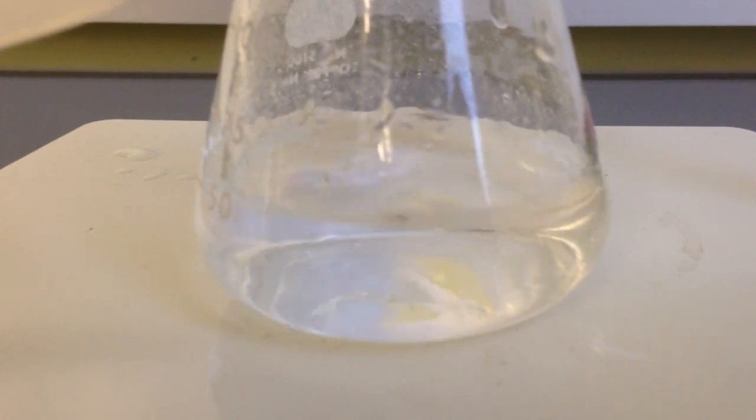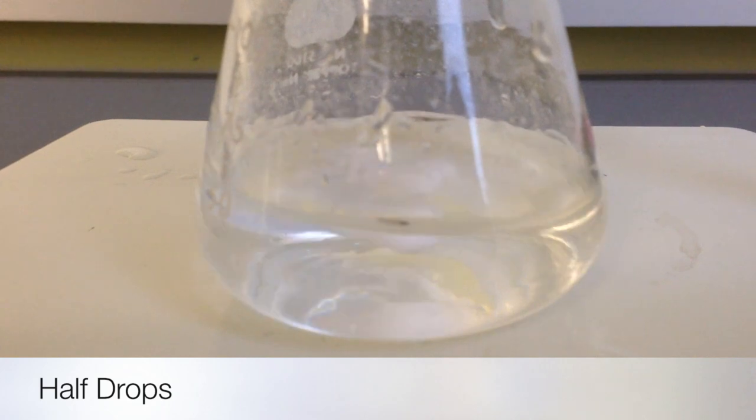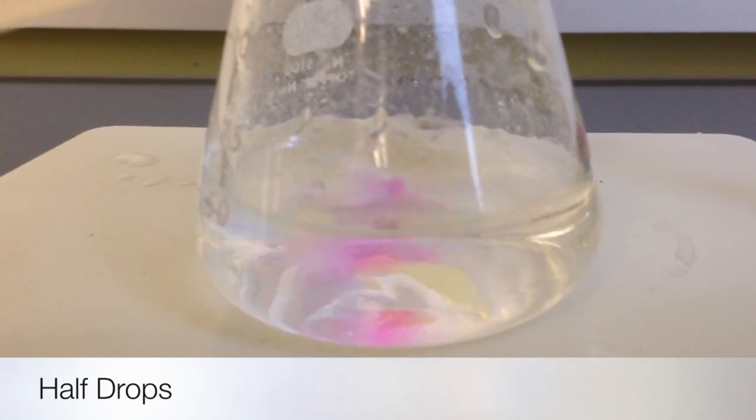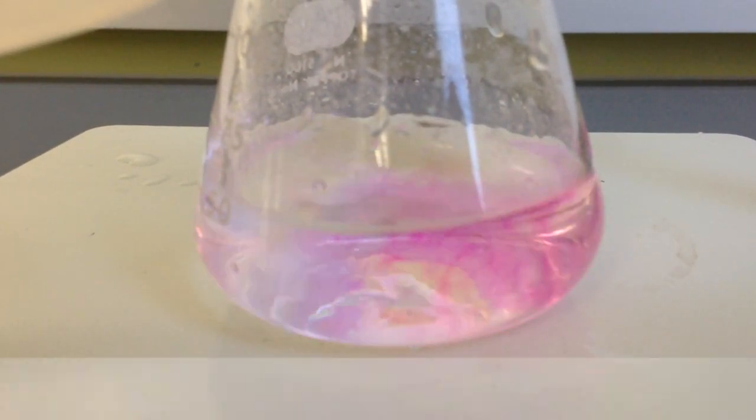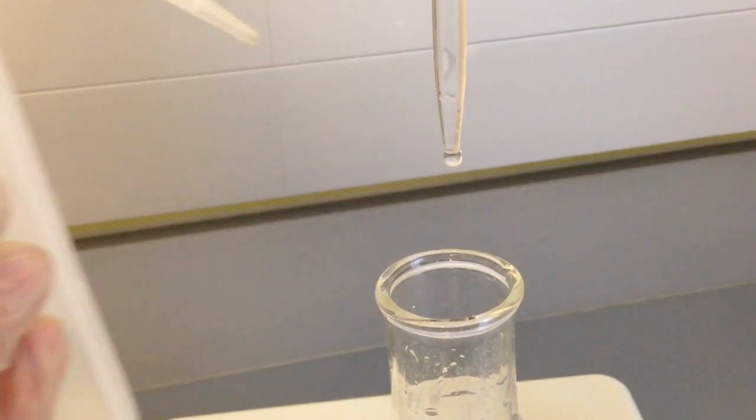Once the sample is very near the endpoint and indicator lasting for about 5 seconds, half drops come in handy. These are useful because of their precision and minimize over titrating the sample. To release half a drop, carefully open the stopcock just enough to form half a droplet, then quickly close the stopcock.